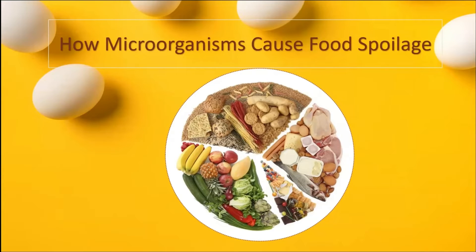What we call food spoilage is really when microorganisms are eating our food. Their ability to break down organic matter plays a critically important role in nutrient recycling in nature. To digest different types of nutrients, microorganisms have evolved the ability to produce various enzymes and metabolic pathways.